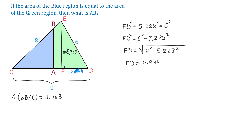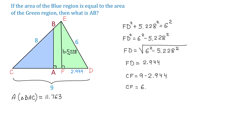If FD is 2.944 and CD equals 9, then we can find CF by subtracting 2.944 from 9. So CF equals 9 minus 2.944, which gives CF equals 6.056.